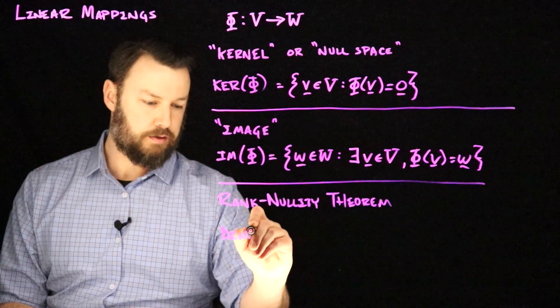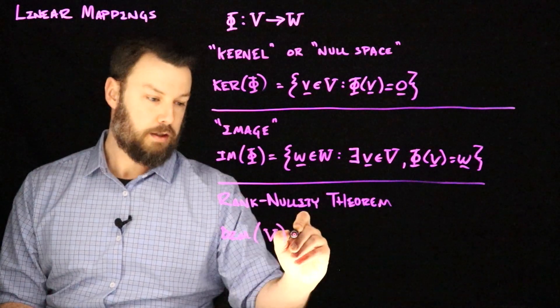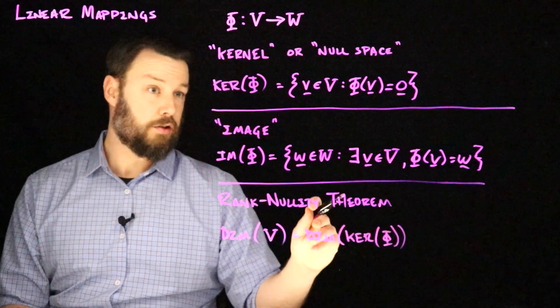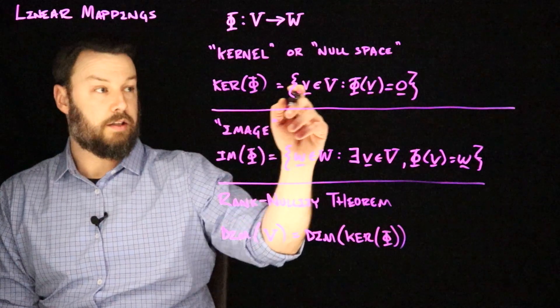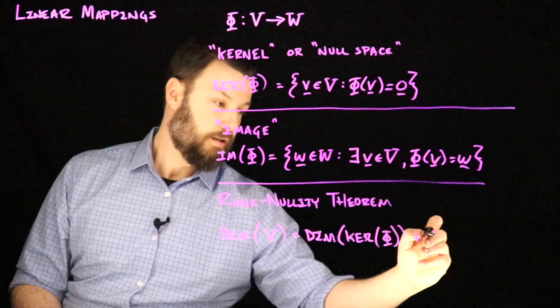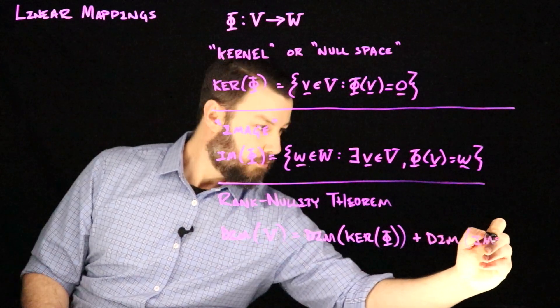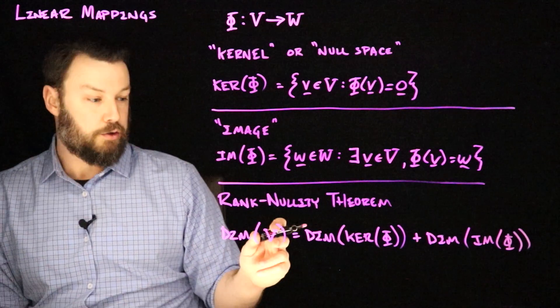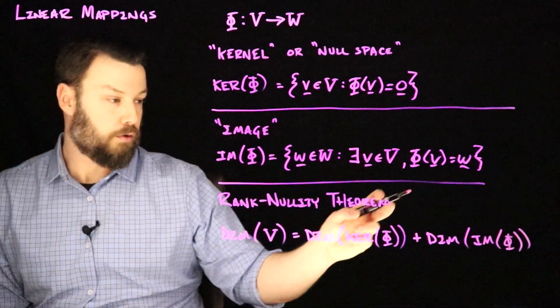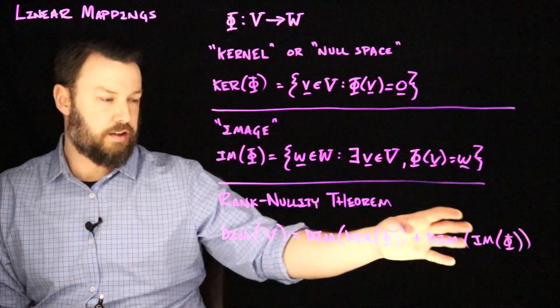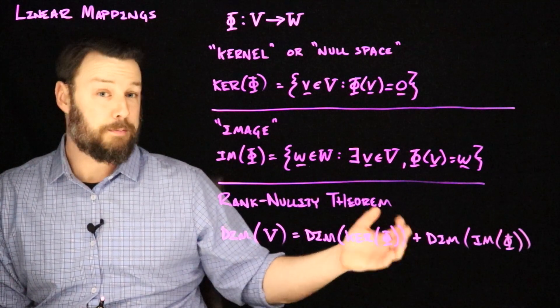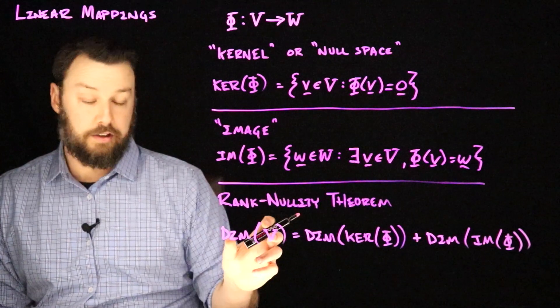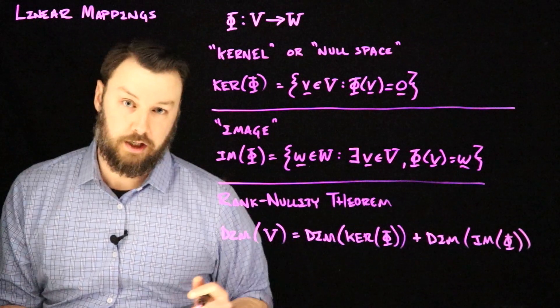The dimensions of V need to be equal to the dimension of the kernel of Phi, so the dimensions of the places that would send you to zero plus the dimension of the image. So you could think of this as kind of saying that you have to go somewhere. That if you're a part of V that you either need to be part of the kernel or sort of part of the image. That doesn't quite make sense because the image is defined in terms of W. So you could think of this perhaps as the pre-image. That is the places in V that would send you to someplace in the image. In any case, the dimensionality of V must be the sum of the dimensionality of the kernel and the dimensionality of the image.